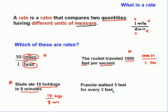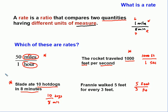What about this? Franny walked five feet for every three feet. It doesn't make any sense — she walked five feet for every three feet. That can't be a rate because we've got the same measures on the top and the bottom. Five feet for every three feet — we have the same units of measure. That is not a rate because it doesn't have two different measures.